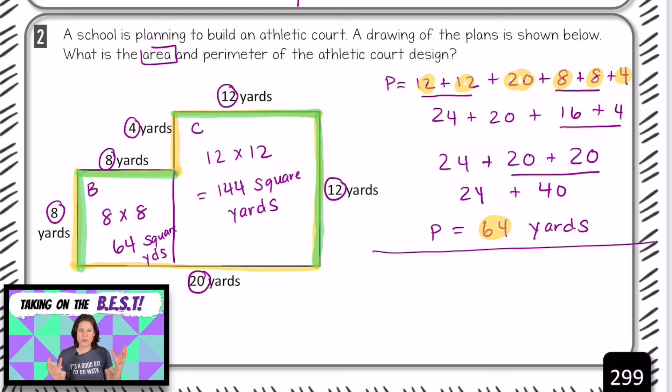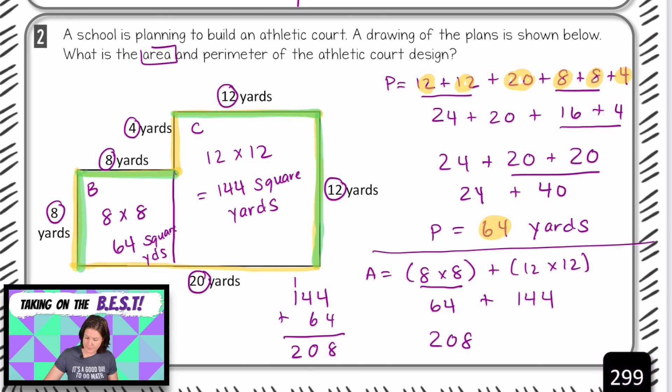Okay, so we found the area of what we called square B and the area of square C because we have the same lengths going on there. Now, what do we need to do to find the total area? Add them up, right? So here's what we did using an equation. We said 8 times 8 plus 12 times 12. We said 8 times 8 equals 64. 12 times 12 equals 144. And when we add those two up, you should get a total of 208 square yards. Okay, so make sure that you have all of that copied. We figured out the perimeter and we figured out the area.